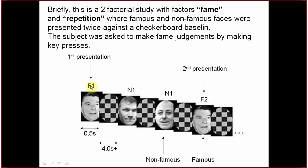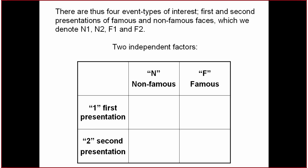That is why this condition can be coded as F1 (famous, first presentation) and F2 (famous, second presentation). Those two presentations are N1, but later those faces will appear once again and be called N2. Subjects were asked to make judgments about how famous those faces are, by key presses during this interval. The judgments are not necessarily part of this model, but this is the model — two factors, totally independent.